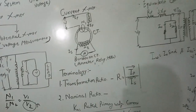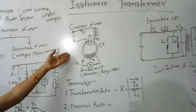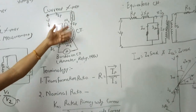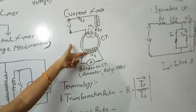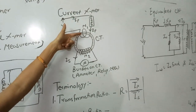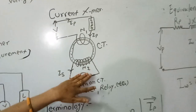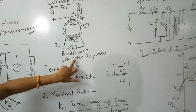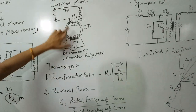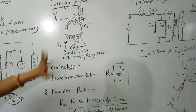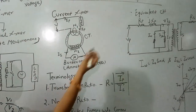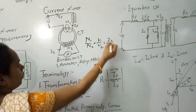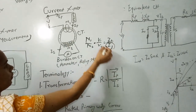Now we come to the topic of current transformers. In the construction of a current transformer, the primary supply is given to the load. The CT has a primary winding and secondary winding. The primary winding has approximately 1 turn and the secondary has many turns. It is connected to a burden, ammeter, or relay, which measures the secondary current related to the primary current by the relation N1/N2 = V1/V2 = I2/I1.